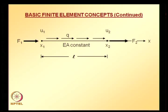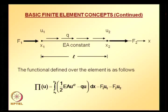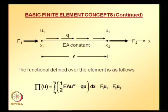For this element with point loads at both ends, the potential energy functional has terms F1*u1 and F2*u2 — two terms — whereas for the bar fixed at one end there was only one F*u term. The rest of the formulation is similar. The x-coordinate system is mapped to an s-coordinate system such that x1 coincides with s = -1 and x2 coincides with s = 1.